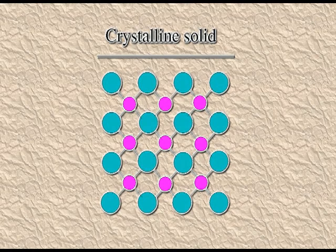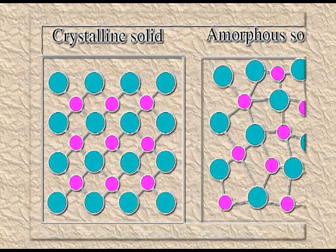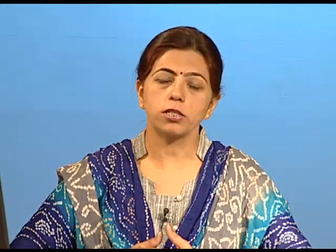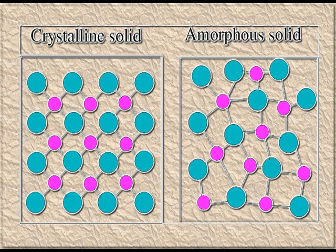Solids are further classified into crystalline and amorphous states. When the constituent particles are orderly arranged and the orderliness is throughout, that solid is a crystalline solid. In the case of amorphous solids, particles are not arranged in a regular fashion — if there is orderliness, it is only in very small, scattered portions. So depending upon the arrangement of atoms, a solid can be crystalline or amorphous.